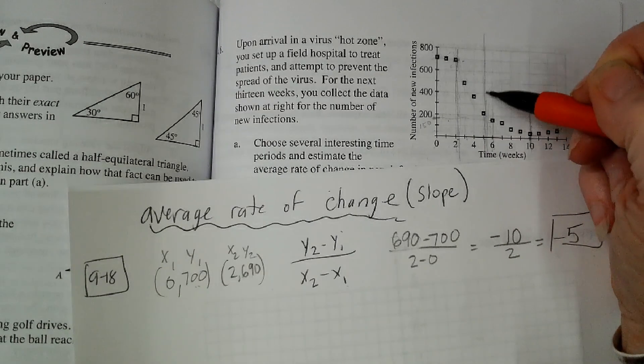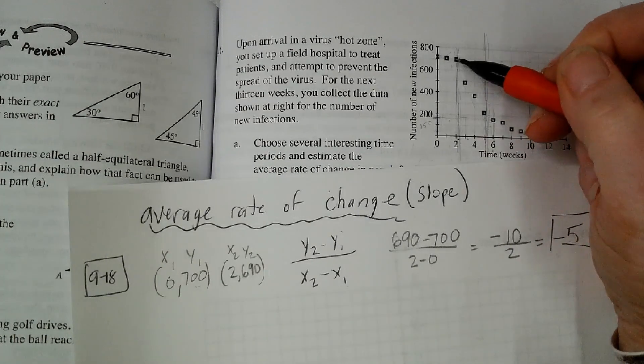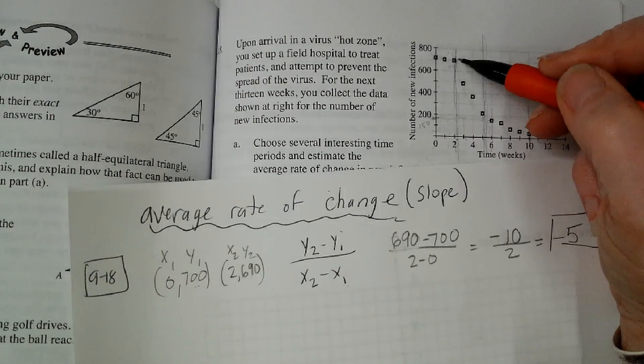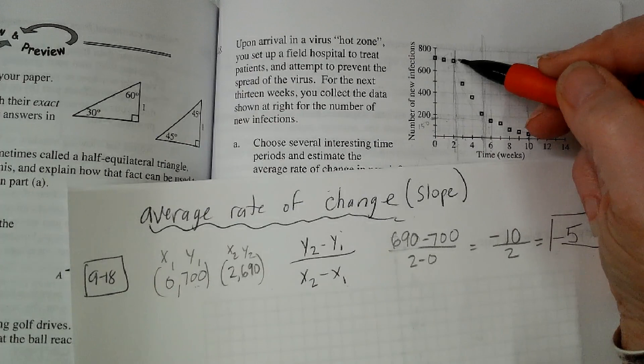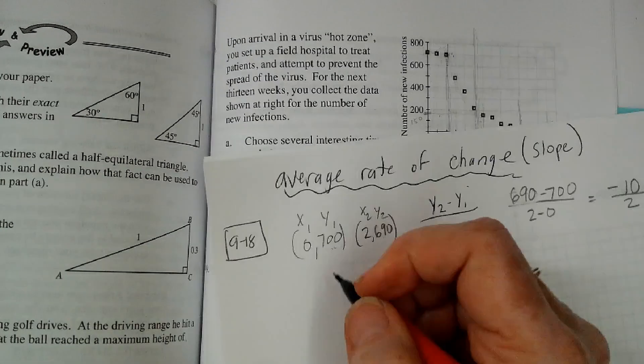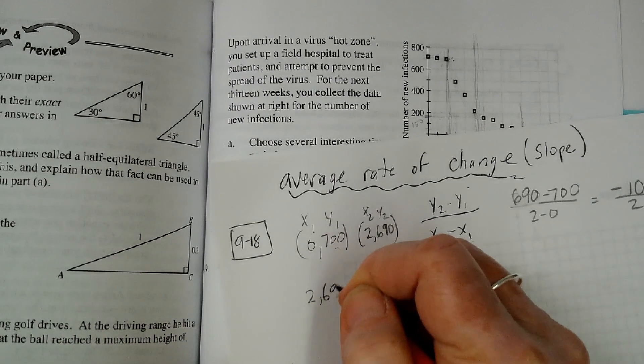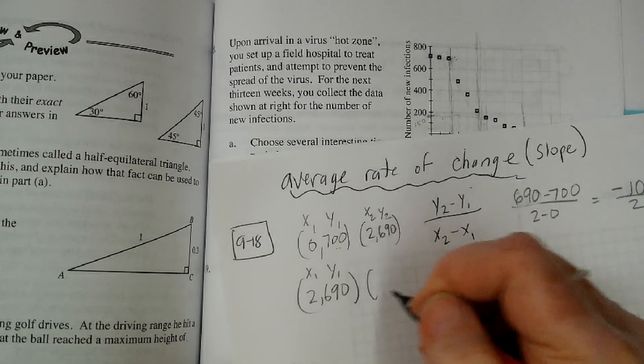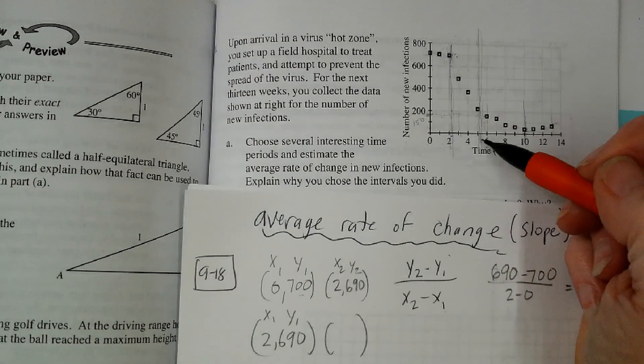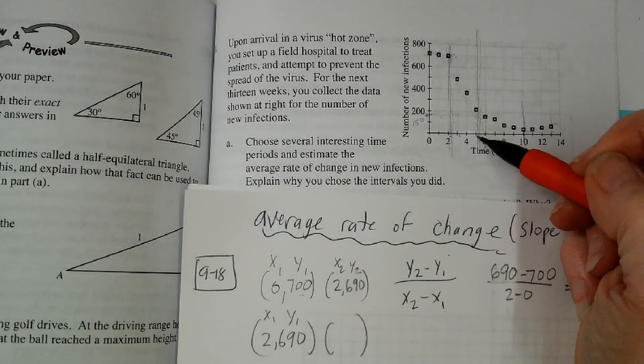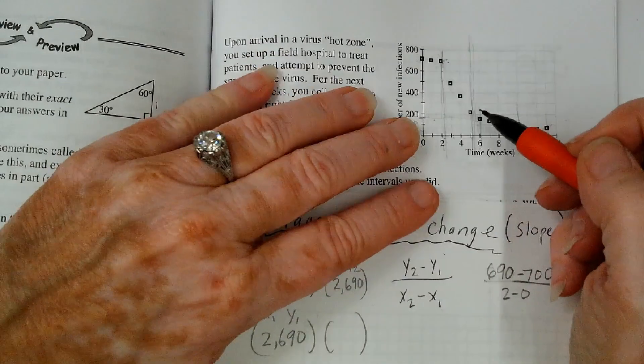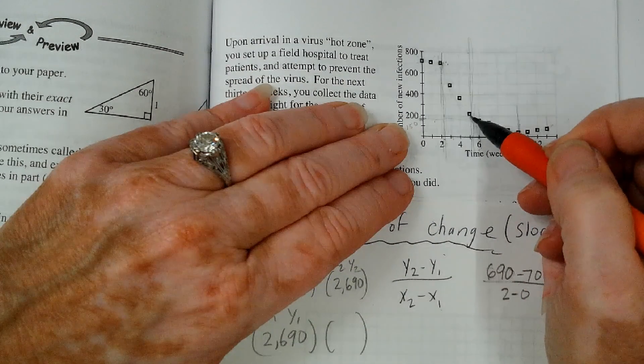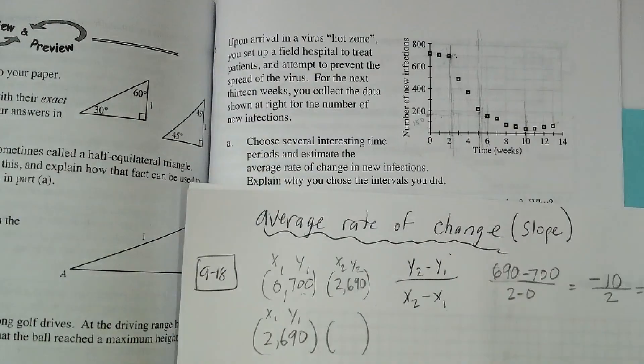And the reason that interval seems interesting to me is because it has a very steep drop off. So for this ordered pair, I think I'm going to call it 2, 690. That's going to be X1, Y1. And then the ordered pair for 5, that's going to be 5 comma, I don't know, it looks like it's very close to 200.